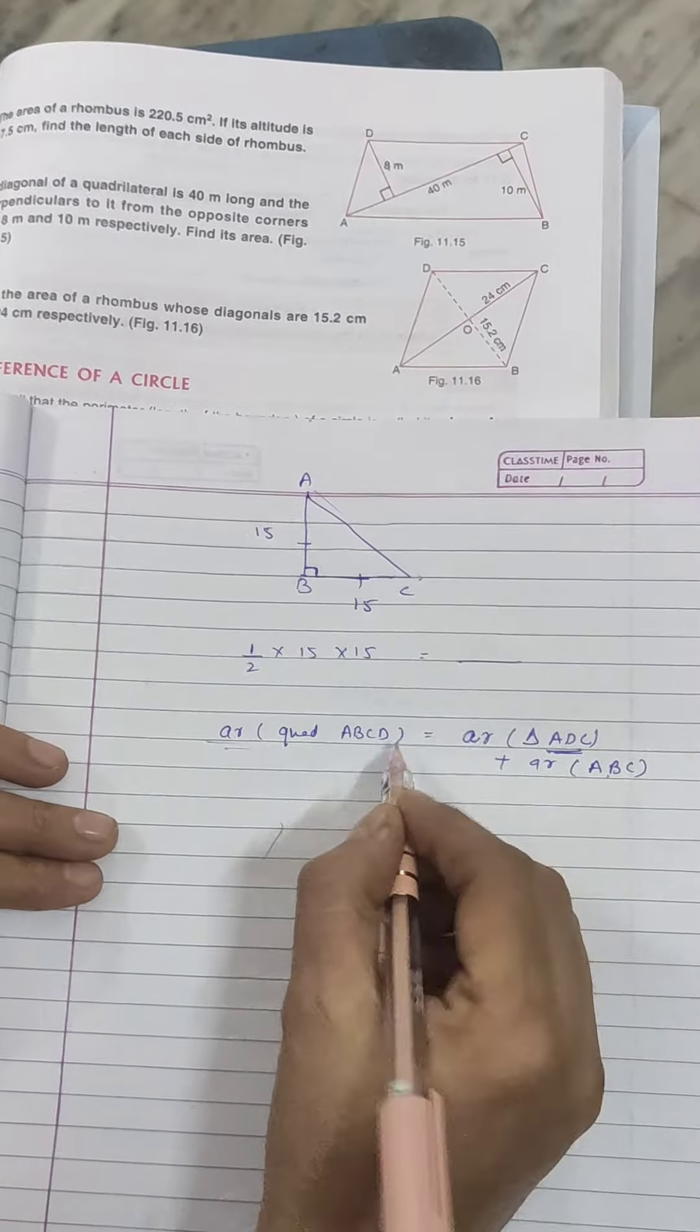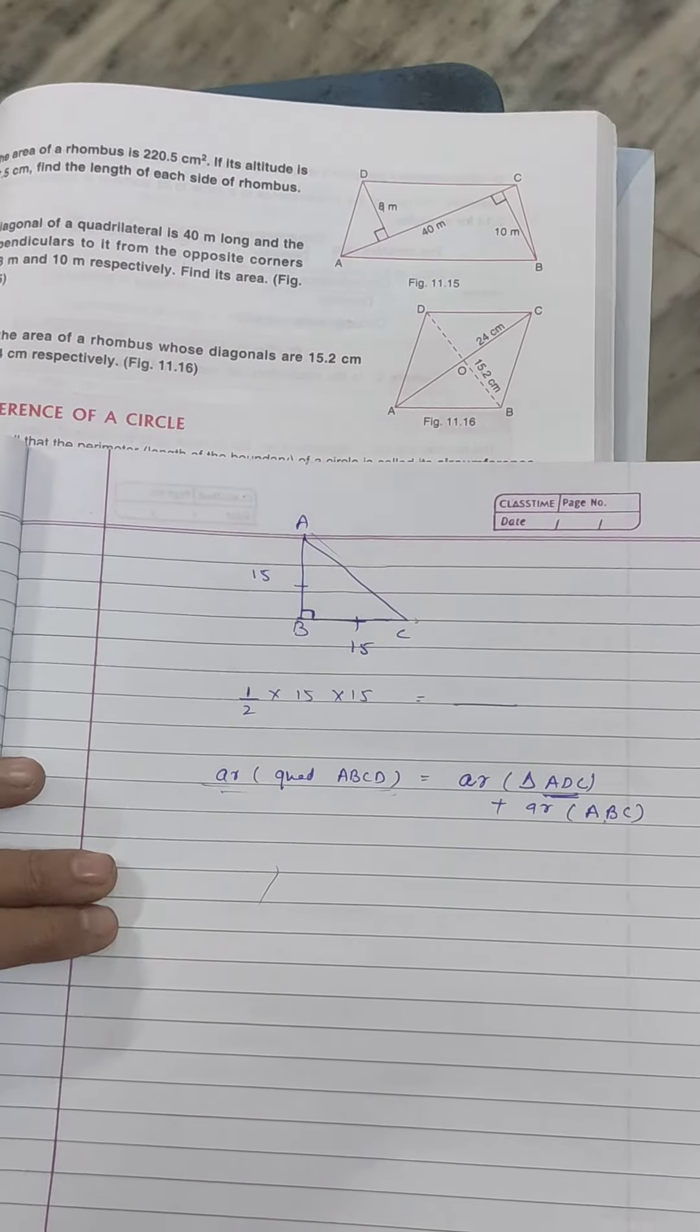Area of quadrilateral ABCD is equal to this plus this. Okay, okay.